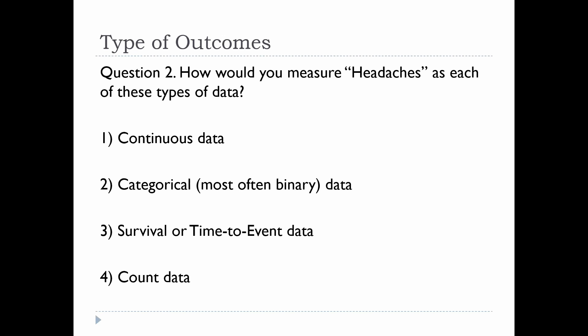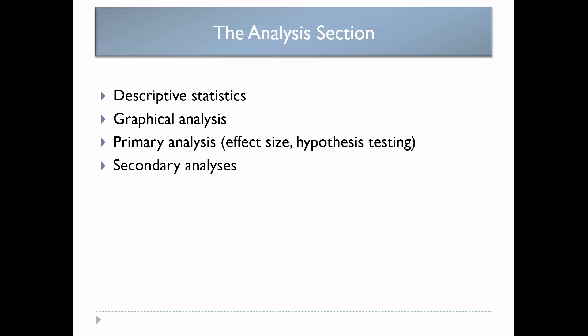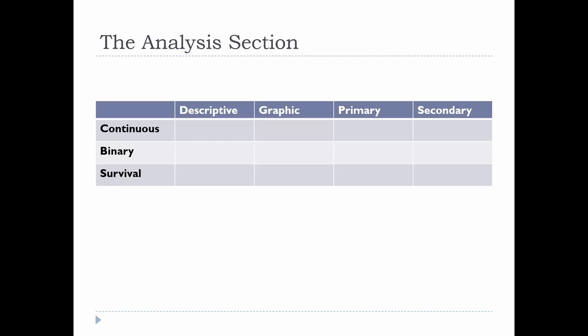You see how the same outcome variable can actually be categorized in any one of these, and no one can tell you which is the right one to choose — you have to choose that as the investigator. Once you've made that choice, that's when everything gets started. So I'm going to show you guys this three-by-four table — the eureka moment. The rows are continuous, binary, and survival outcome variables, and the columns are the contents of your research section: descriptive, graphic, primary, and secondary. If you fill in this table, you really have analysis in a nutshell, and it becomes a cheat sheet for writing your analysis section.